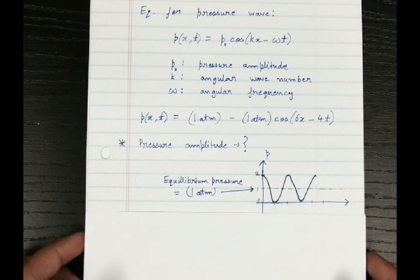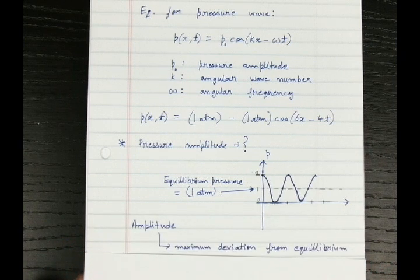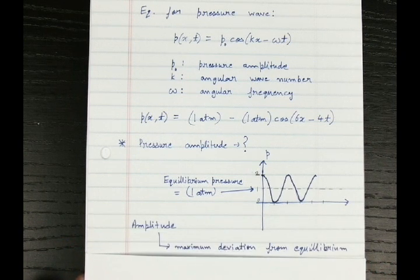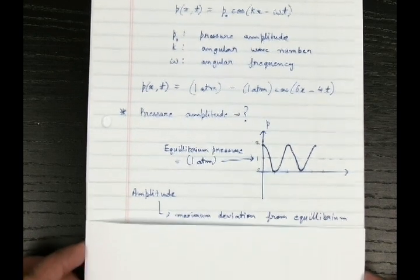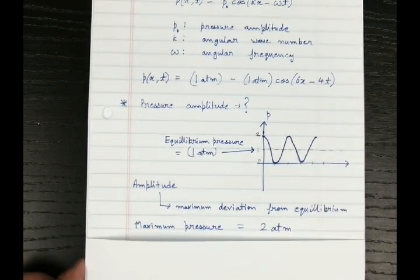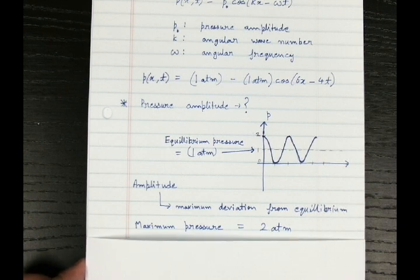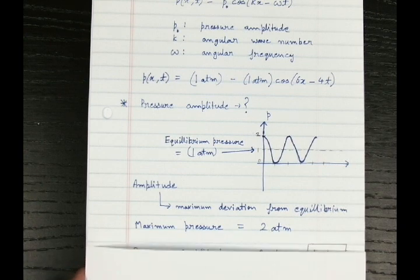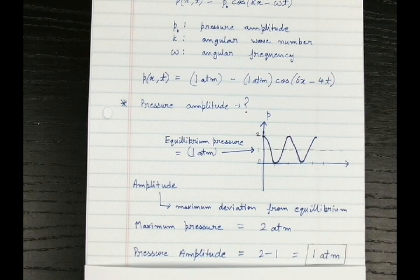Now we have to find the amplitude. The amplitude is the maximum deviation from the equilibrium. Even though for our case the maximum pressure is 2 atm, the amplitude will be the deviation from the equilibrium that is 1. So our amplitude will be 2 minus 1 equal to 1 atm.